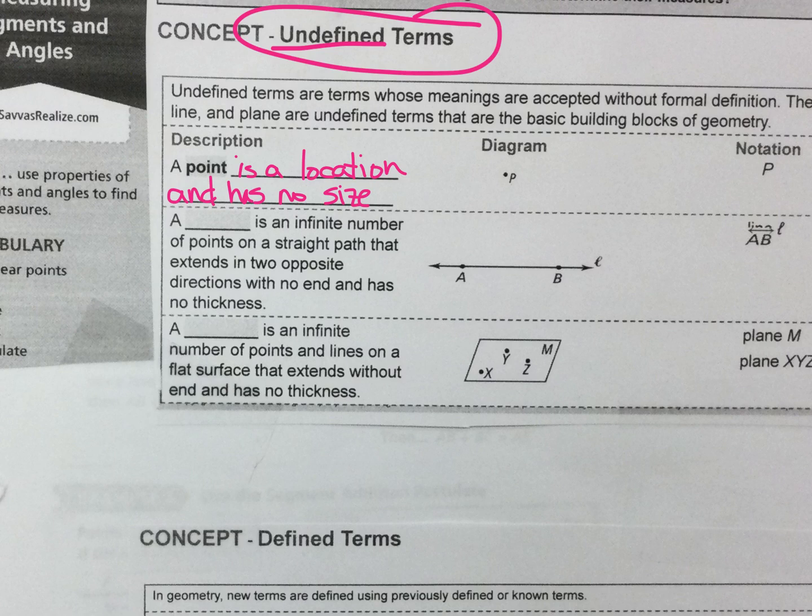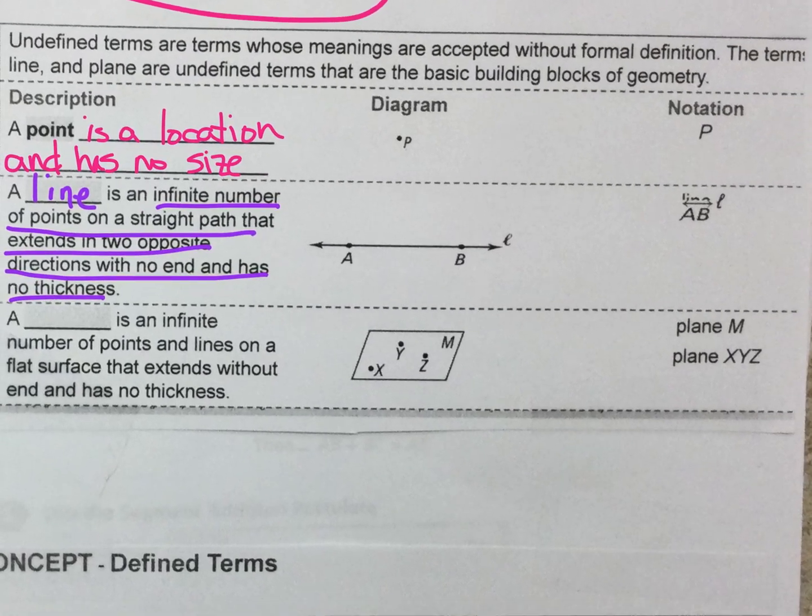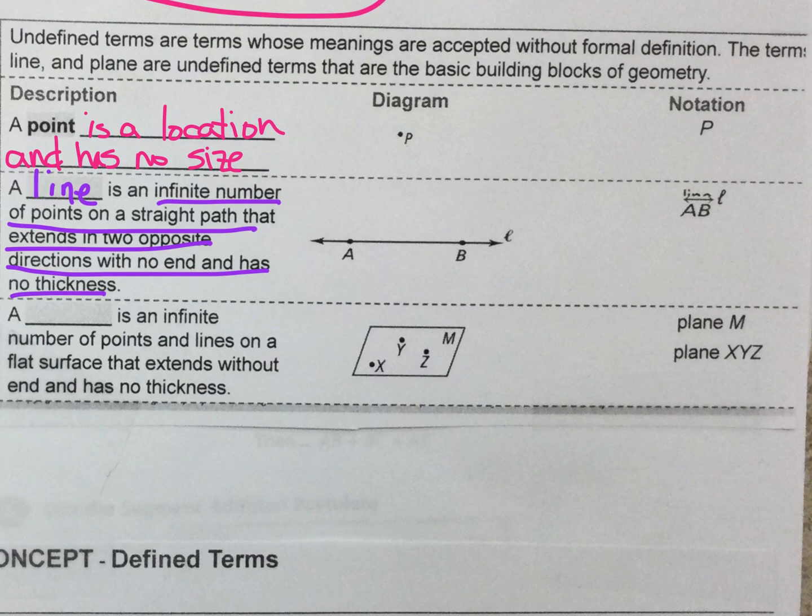And you can see the diagram here what a point looks like in the notation, so pay attention to those. Also a line is an infinite number of points on a straight path that extends in two opposite directions with no end and has no thickness. And you can see over here how we label them. You can label them with one letter, you can label them with two letters.